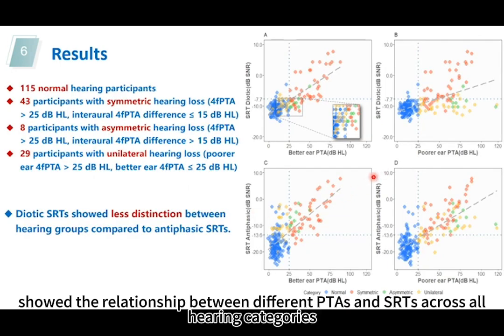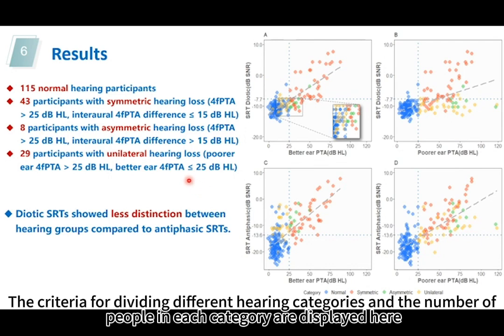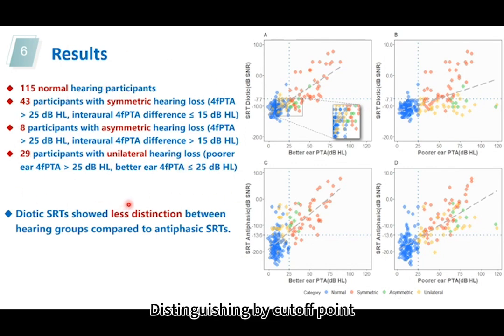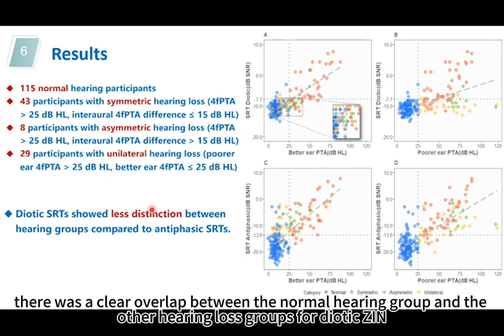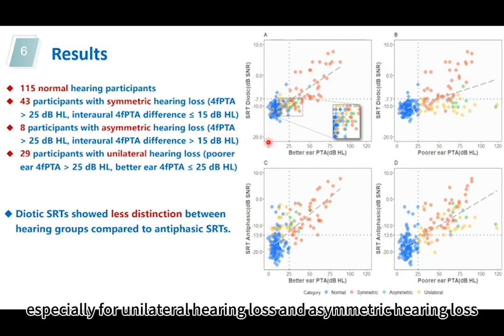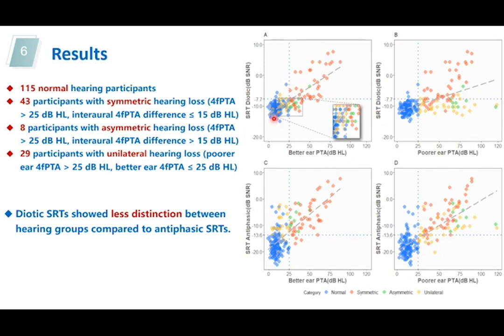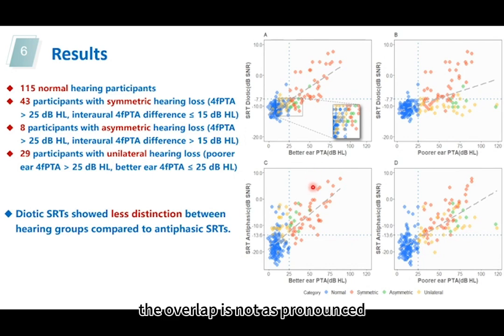This figure shows the relationship between different PTAs and SRTs across all hearing categories. The criteria for dividing different hearing categories and the number of people in each category are displayed here. Distinguishing by cutoff point, there was a clear overlap between the normal hearing group and the other hearing loss groups for the diverted scene, especially for unilateral hearing loss and asymmetric hearing loss. In the antithelastic scene SRTs, the overlap is not as pronounced.